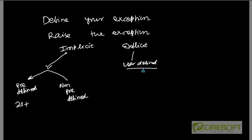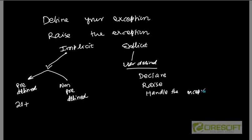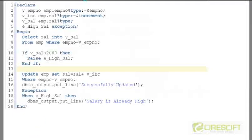The other type of exception we are discussing right now is explicit exception, or user-defined exception. In this case, you first declare the exception, then you raise it based on some condition, and then you handle it. The main difference from implicit exceptions is that it will not automatically be raised — the user has to raise it depending on a particular condition.